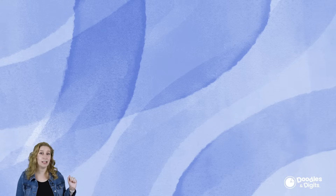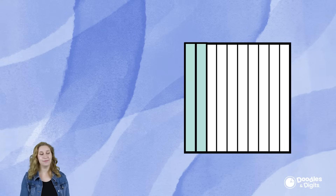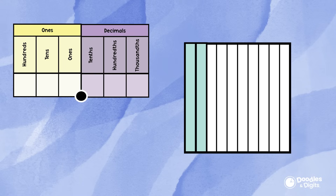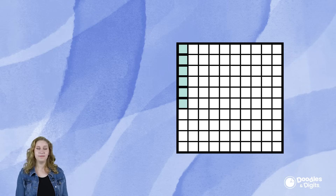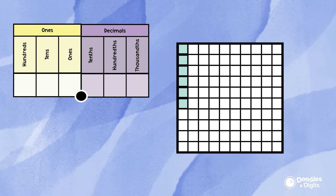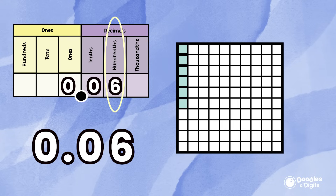There are a few different ways we can show decimal place value. The first is with models. Let's see if we can figure out what decimal this model is showing. Use the place value chart to help you. First we're going to determine how many pieces this whole is divided into — it's divided into tenths, so we write our number in the tenths place. We have two tenths, so our decimal is 0.2. Now let's try another model. This whole is broken into hundredths, so we put the number in the hundredths place. We have six hundredths, and zero tenths, so our answer is 0.06.